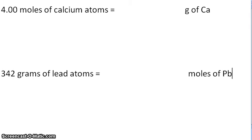For this video we are going to convert moles of an element to grams of an element, and then the opposite way, from grams of an element to moles of an element. Your first example is 4.00 moles of calcium atoms equals blank grams of calcium. You need to find your molar mass of calcium.